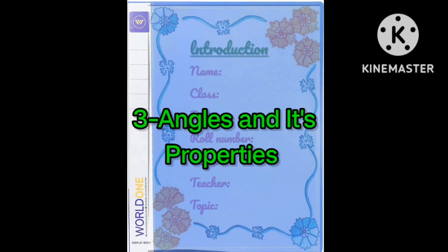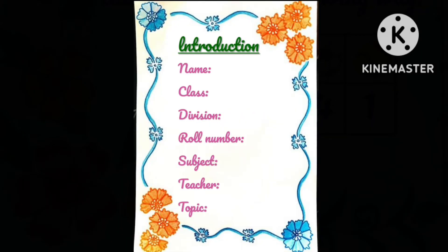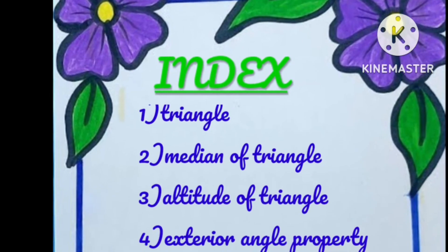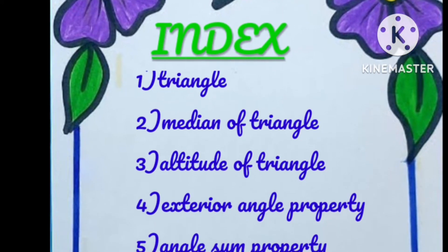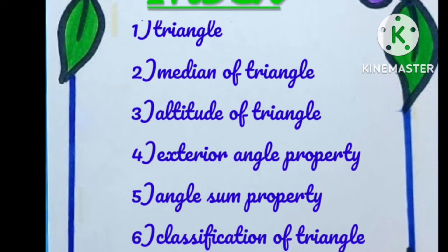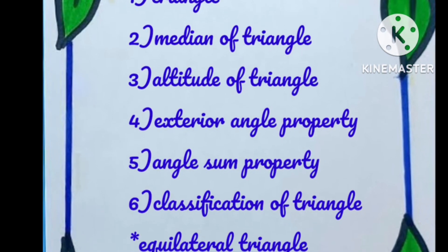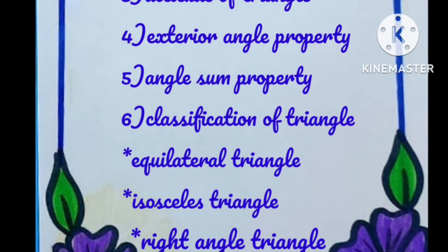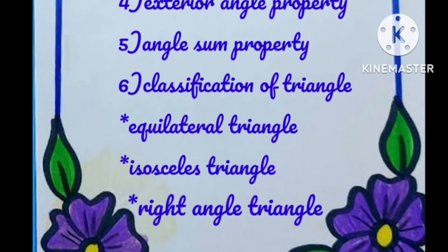The third project is Angles and Its Properties. The first page is introduction: name, class, division, role number, subject, teacher, and topic. The index covers: triangle, median of triangle, altitude of triangle, exterior angle property, angle sum property, and classification of triangles including equilateral triangle, isosceles triangle, and right angled triangle.